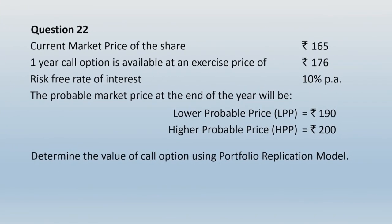The question says: current market price of the share is rupees 165. A one-year call option is available at an exercise price of rupees 176. The risk-free rate of interest is 10 percent per annum. The probable market price at the end of the year will be either a lower probable price or a higher probable price, which is 190 or 200. Determine the value of the call option using the portfolio replication model.